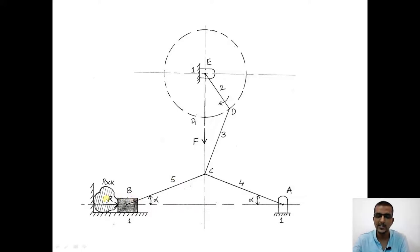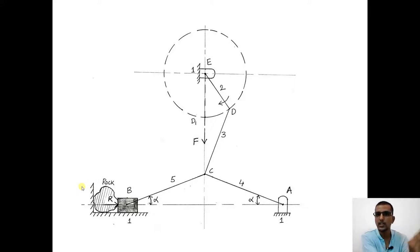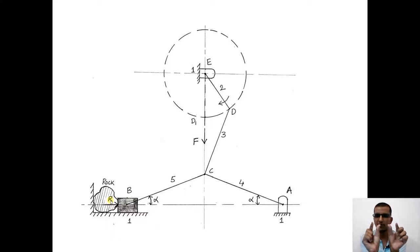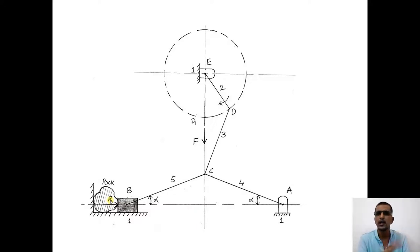On the side connected to the slider, we place a rock. The objective is that by simple rotation of the crank, we can crush the rock placed on the left-hand side of the slider. As D moves toward D1, C moves downward and alpha keeps decreasing. At the moment when links four and five become collinear, alpha becomes zero, and the force from the crank gets multiplied to such a large extent that it overcomes the resistance of the rock, crushing it in no time.